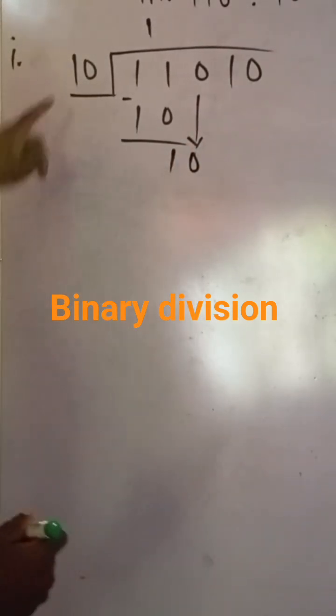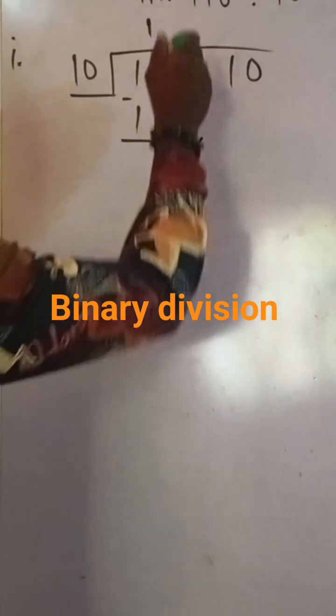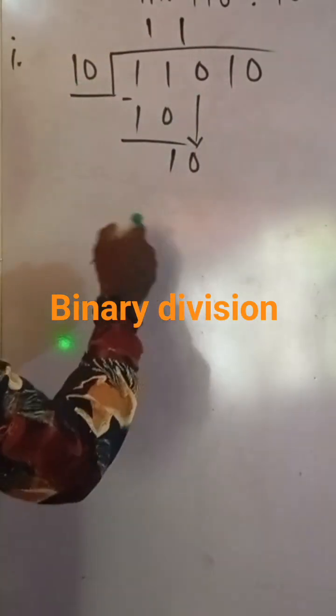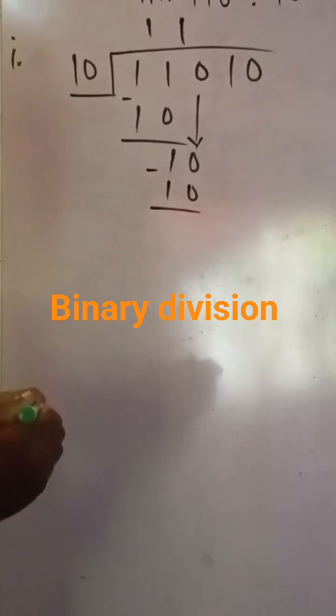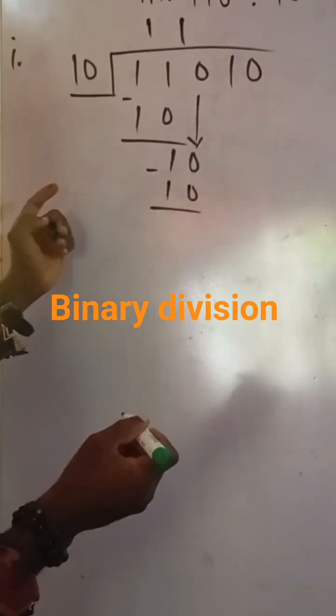Now you say 10 into 10, 1. 1 times 10 is still 10. You do your subtraction again. 10 minus 10 is 0. If you want you can write a 0, if you want you can ignore it.